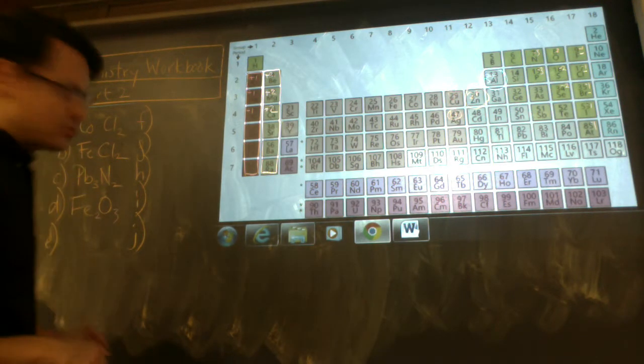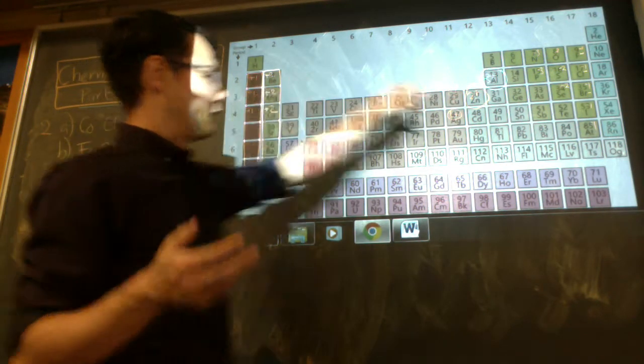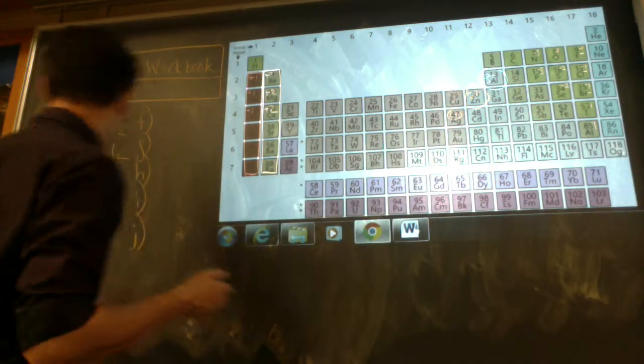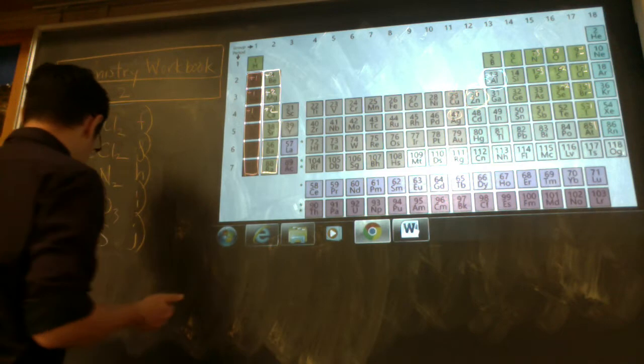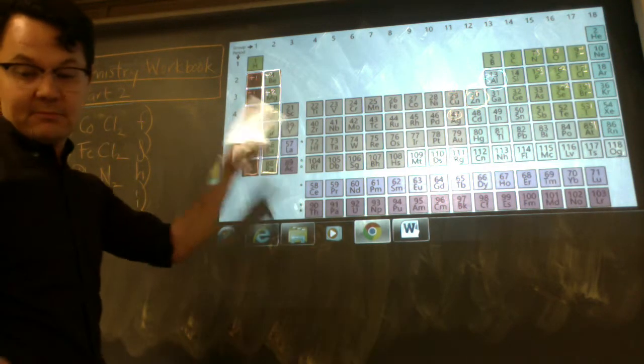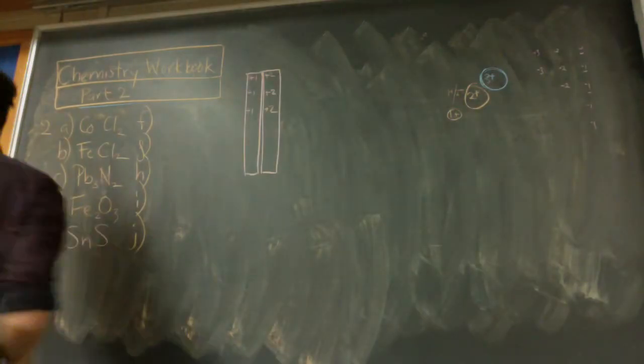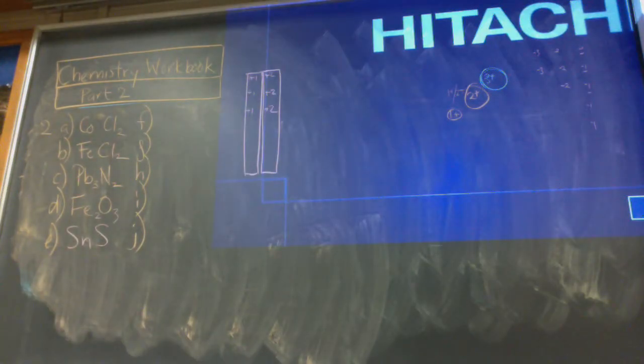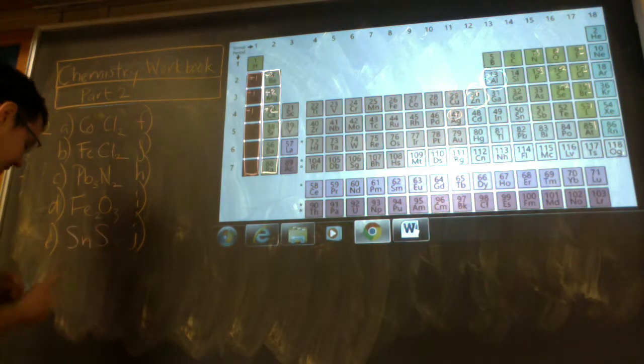Tin(II) sulfide. Tin is a tricky one to remember but it's Sn. Tin(II) sulfide. So tin from the name is 2+ and sulfur is also 2-. Tin 2, sulfur 2 is the same as tin 1, sulfur 1. So it's SnS.